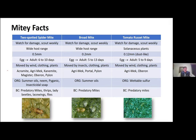For two-spotted spider mites, most miticides will control them. For broad mites, we're getting down to abamectin, Portal, and Pylon. For tomato russet mite, it's really abamectin and Oberon that we can use in the greenhouse. In terms of organic controls: summer oils, neem, Pyganic, and insecticidal soap for spider mites; summer oils for broad mite; and wettable sulfur for russet mite.